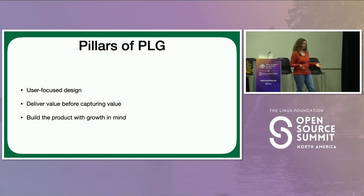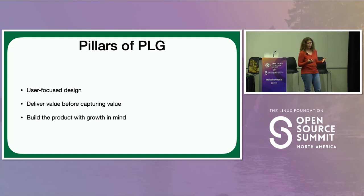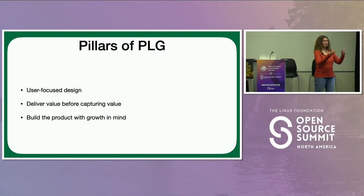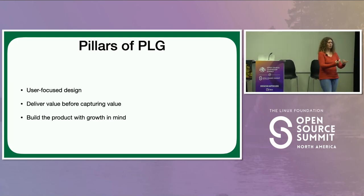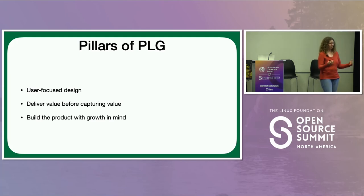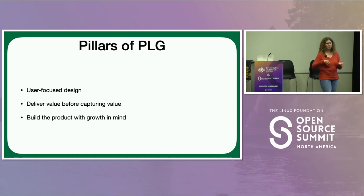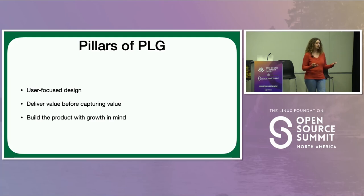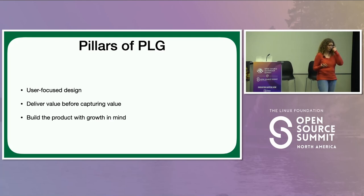The third pillar is a question of intentionality — building your project with growth in mind. How is the project built to remove friction for users? How does it encourage people to use it over and over again? Are there network effects? How does it encourage people to talk to their colleagues and friends and get them using the same project? This is mostly a question of intentionality: is growth something you're even considering as you think about your project roadmap?